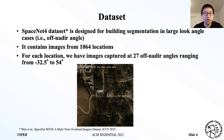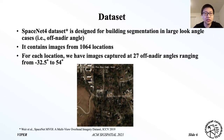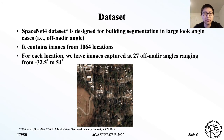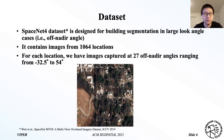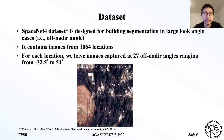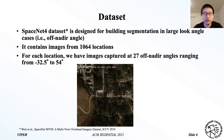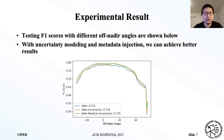In this paper, we used the SpaceNet 4 dataset to evaluate our method. This dataset contains images from the same scene but with different off-nadir angles. We can see that as the off-nadir angle gets larger, the image gets noisier. This is the testing F1 scores for different off-nadir angles. Compared to the baseline U-Net shown as the blue curve, the experiments with uncertainty modeling, the orange curve, show improvement for most of the off-nadir angles.